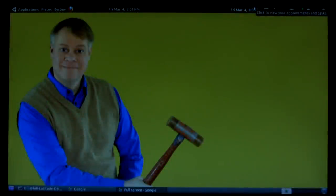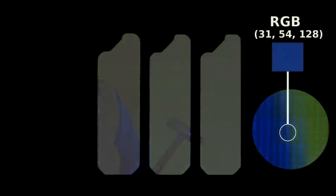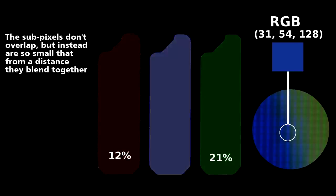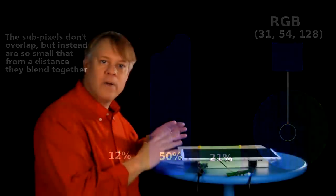For example, to get the color of the blue in my shirt, we set the red subpixel to 12% of maximum intensity, green to 21%, and blue to about 50%. And now for the last critical piece in the glass sandwich.